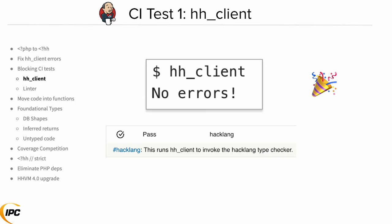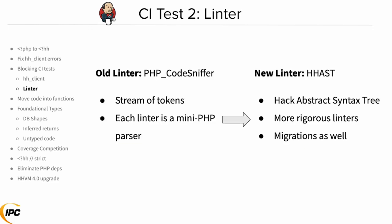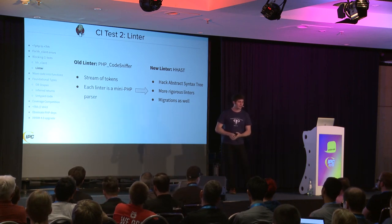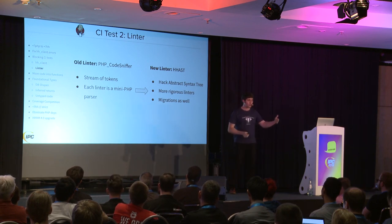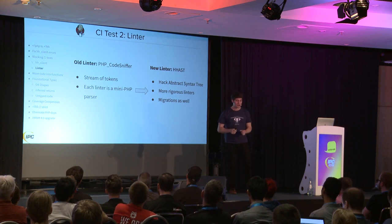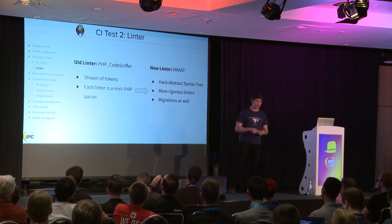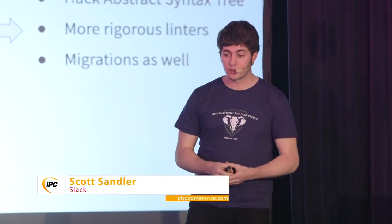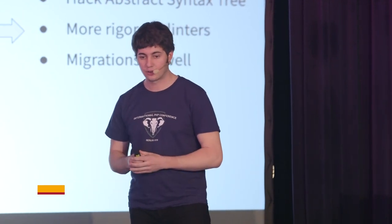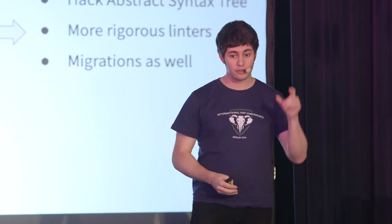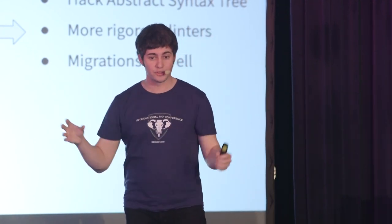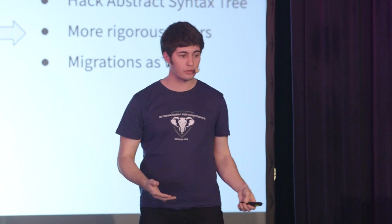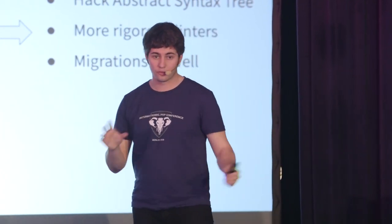There's one other piece we had to deal with before we really started using more Hack syntax, which was our linter. We were using PHP_CodeSniffer. The way those rules work is you have to operate on a stream of tokens, and essentially every lint rule you write is a mini PHP parser. We had a lot of custom lint rules — both for style and for trying to prevent bugs. It was our first foray into static analysis. With Hack, there's a new tool that uses an abstract syntax tree. It's a more structured way of looking at your code: rather than looking at one token at a time, you can look at expressions holistically and understand which elements exist in those expressions. It allows you to write more rigorous linters with less code, and we're also able to use it for migrations.